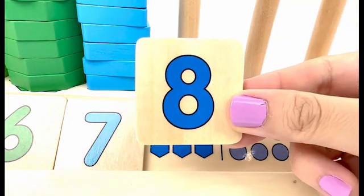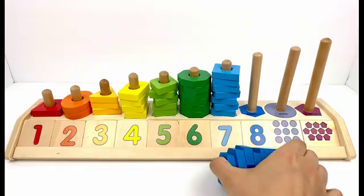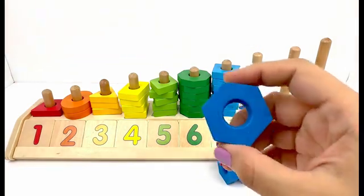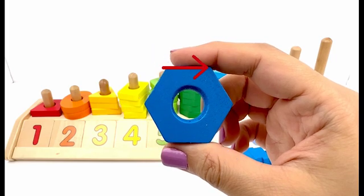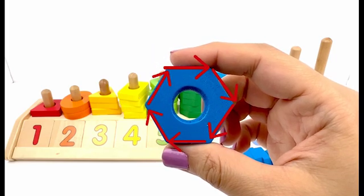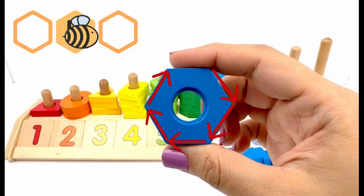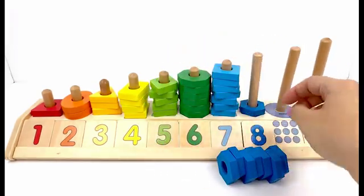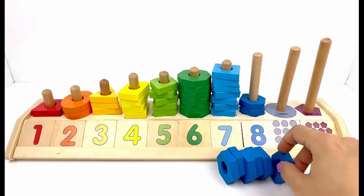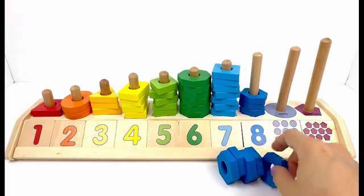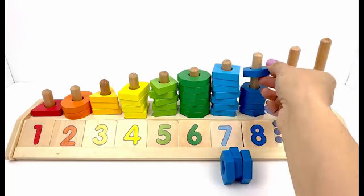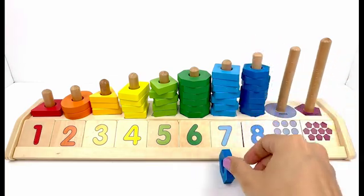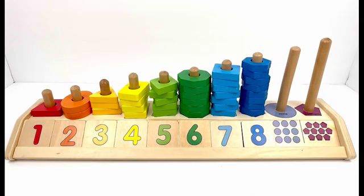So it's number eight. Let's put it here. I also have eight dark blue hexagons here. A hexagon has six corners and six sides. Let's put our hexagons: one, two, three, four, five, six, seven, eight — eight dark blue hexagons!